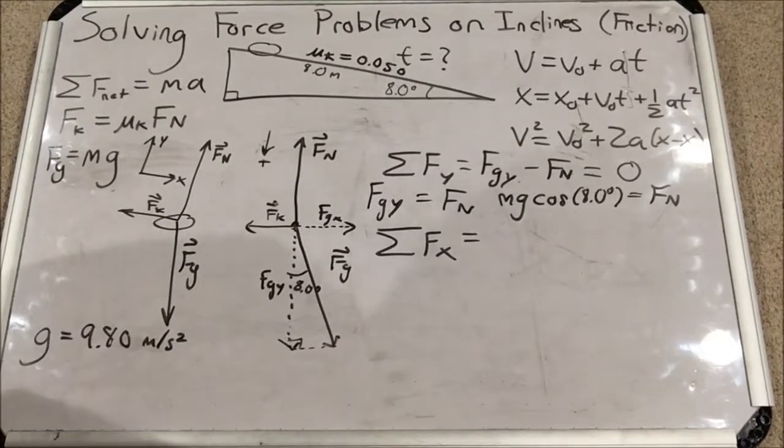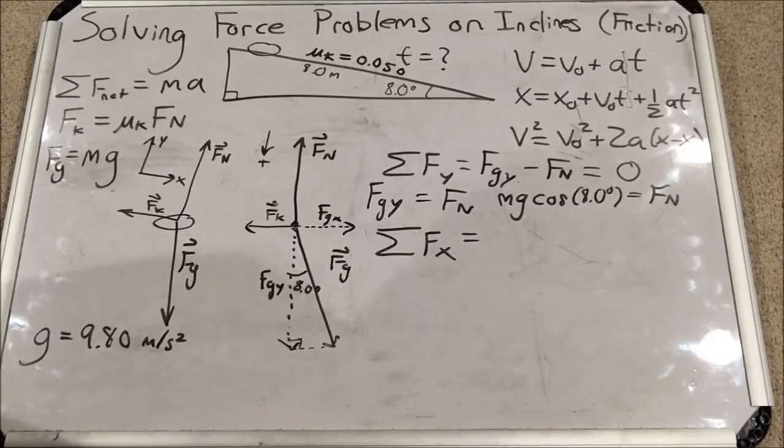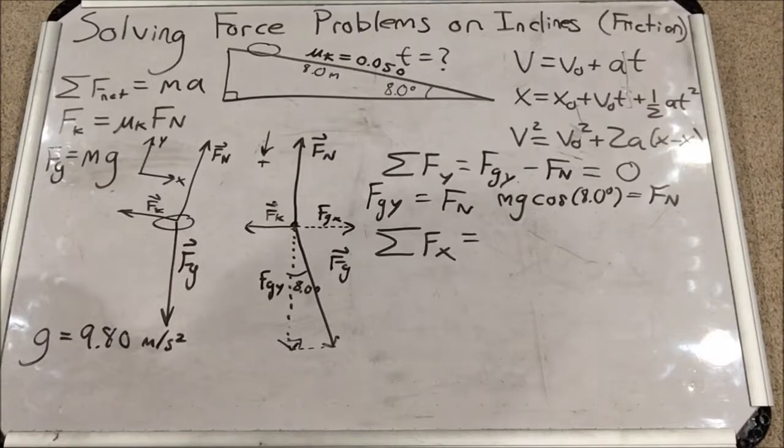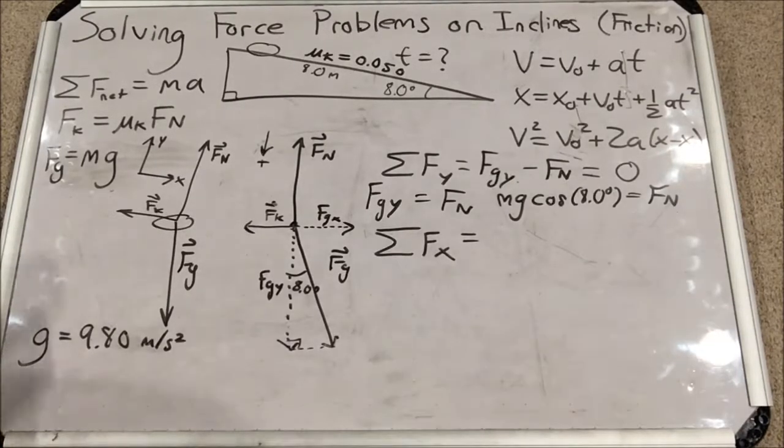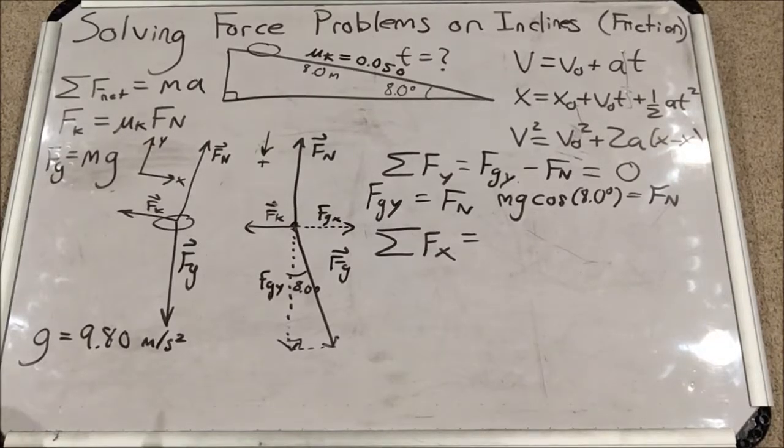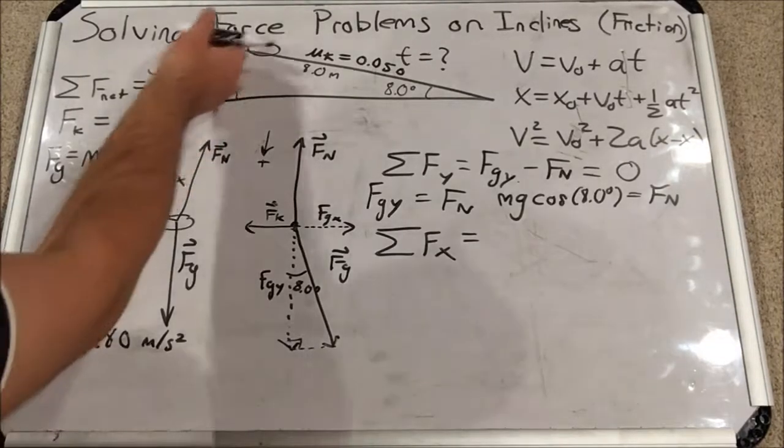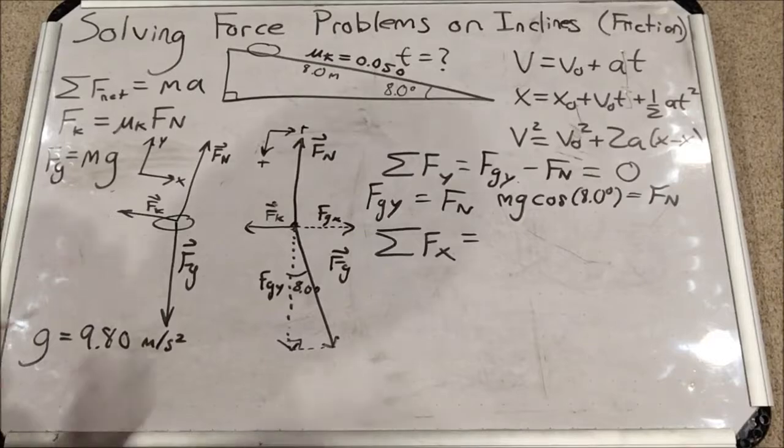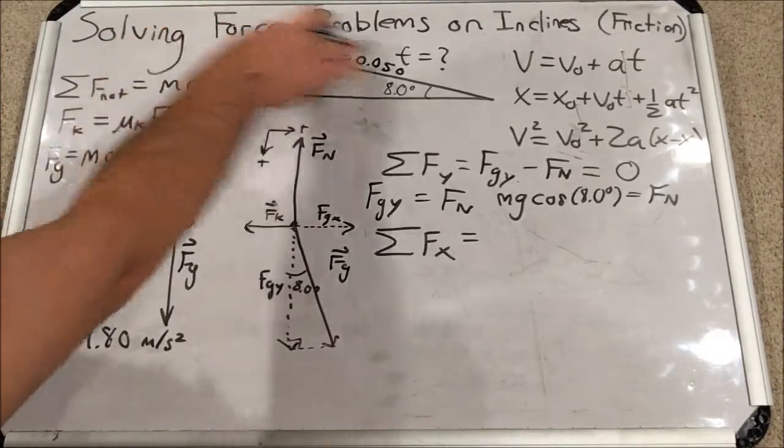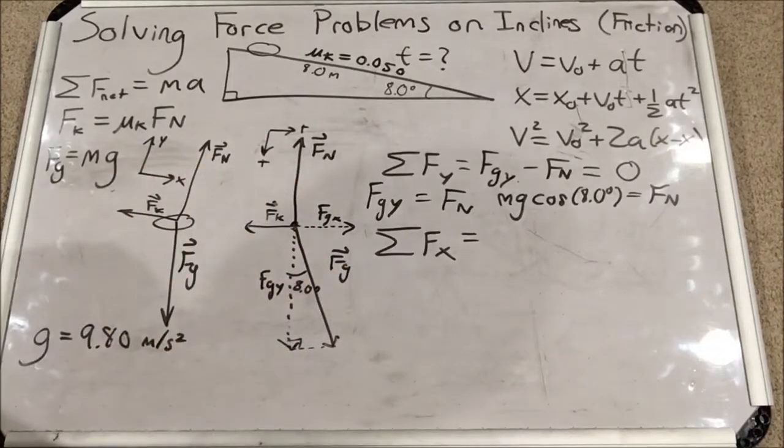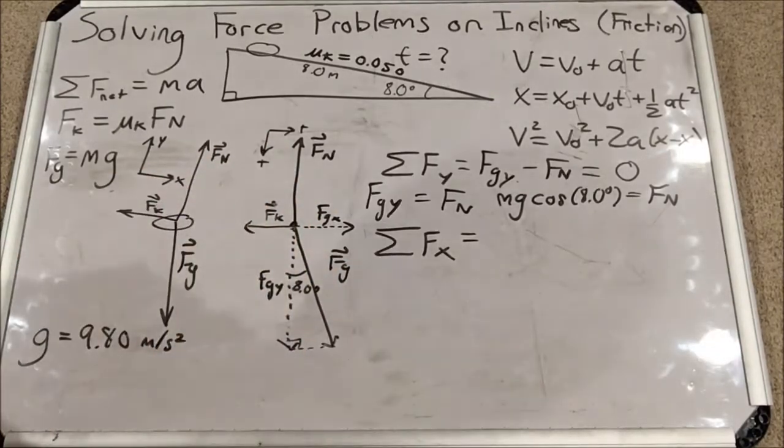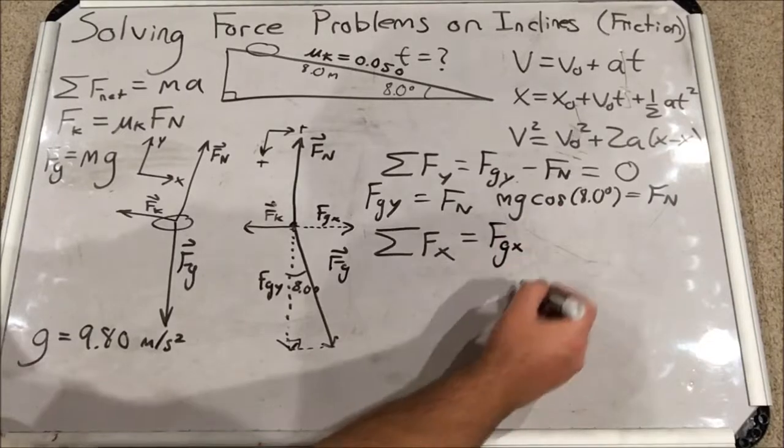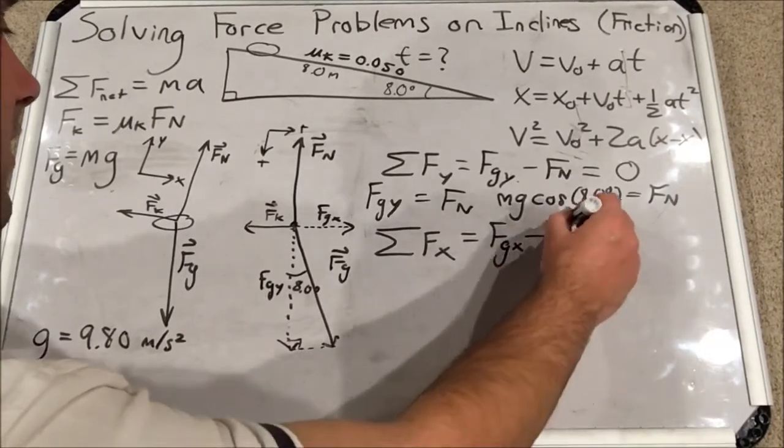Now let's move on to the sum of forces in the x direction. This expression has two forces as well, Fgx and Fk, but we'll do a little more substitution than we did in the Fy sum equation. So we need to choose a positive direction. I'm going to choose the direction the soap is traveling, which is to the right, as positive. And remember, it's a little bit downward, but we've rotated our axis from here to here. So now this is to the right in our rotated axis diagram. So Fgx is positive, and Fk then would be negative, because it points in the wrong direction, quote unquote.